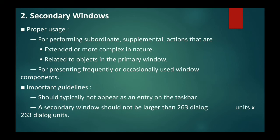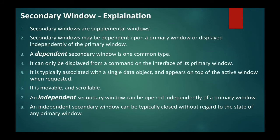Some guidelines for secondary windows: they should typically not appear as an entry on the taskbar, meaning the secondary window should not act as a primary window. The primary window is the initiator of the activity, and the secondary window supports the primary window. The secondary window should not be larger than 263 dialogue units by 263 dialogue units — that is the standard size for a secondary window.